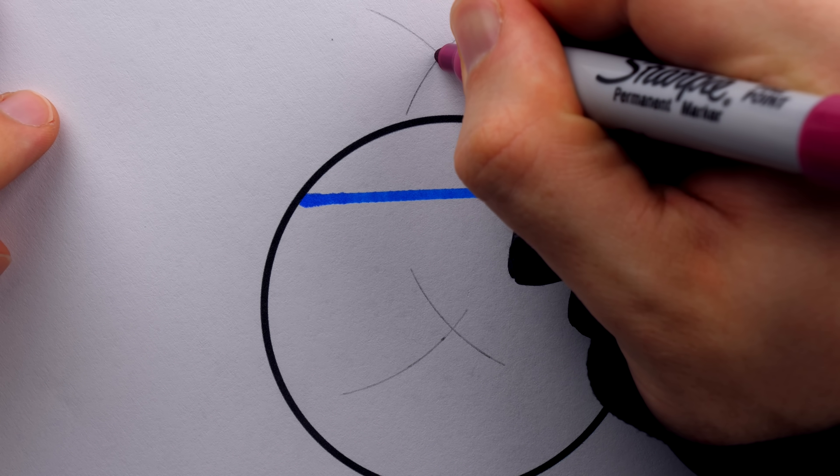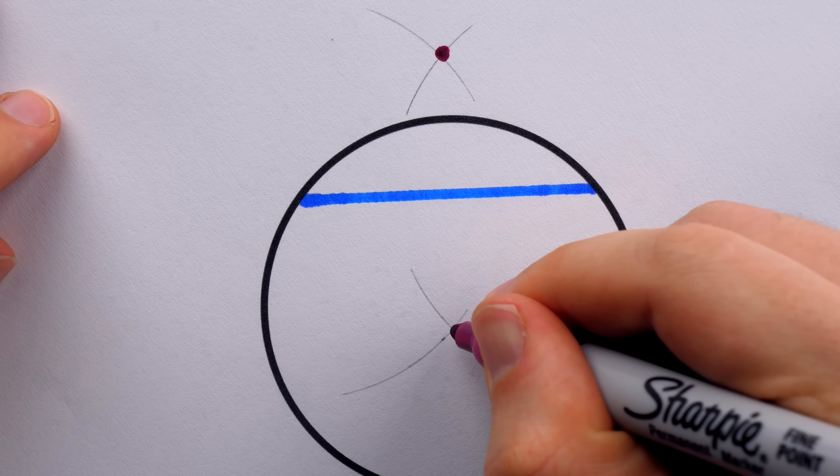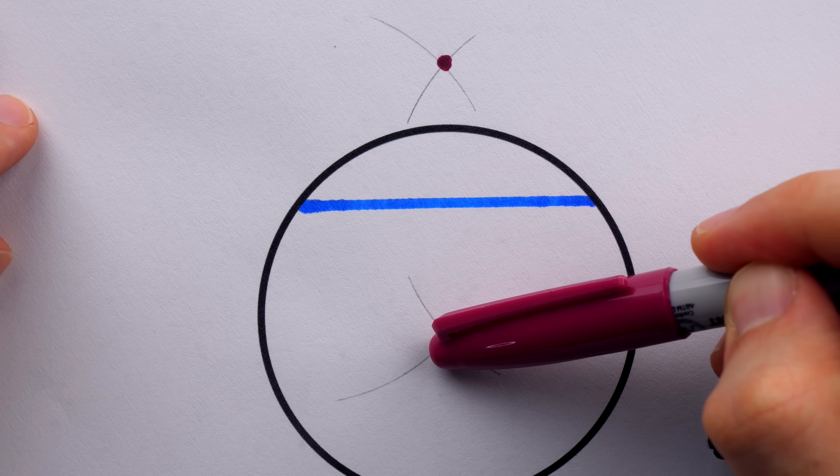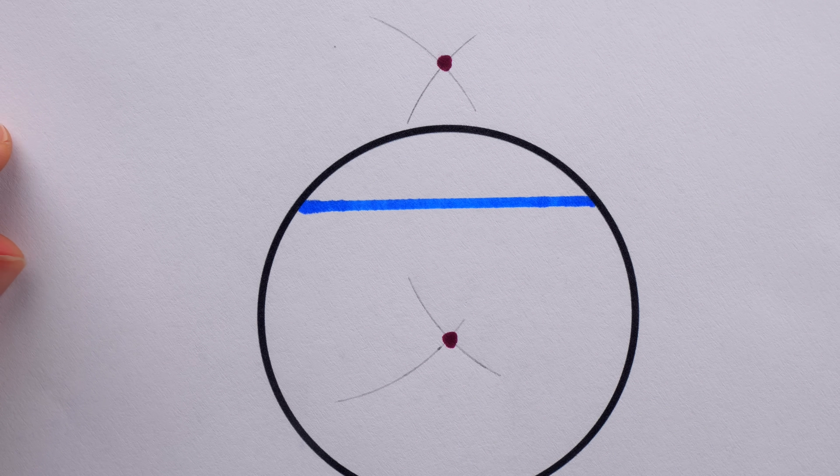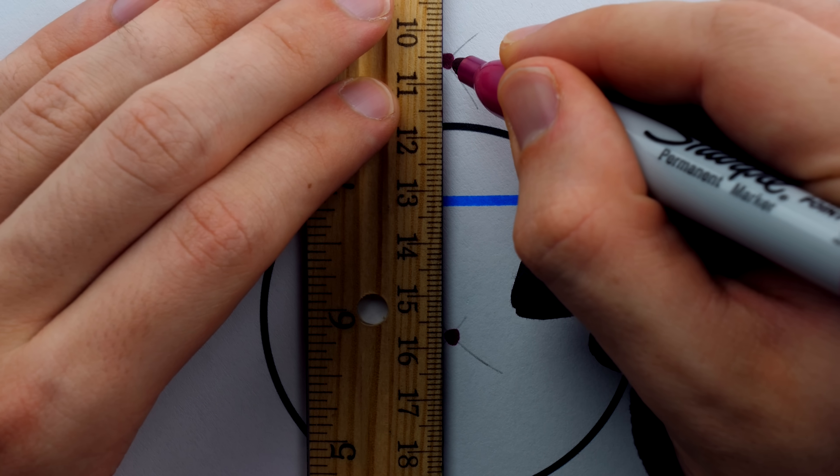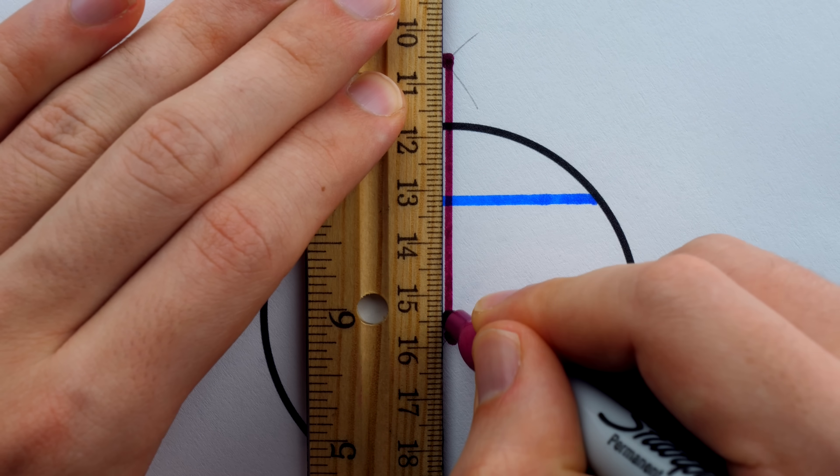It is then the intersections of these arcs that we can use to construct our segment that cuts the chord perpendicularly and in half. So we'll join those endpoints, and this is, of course, what we call in the trade, a perpendicular bisector of the chord.